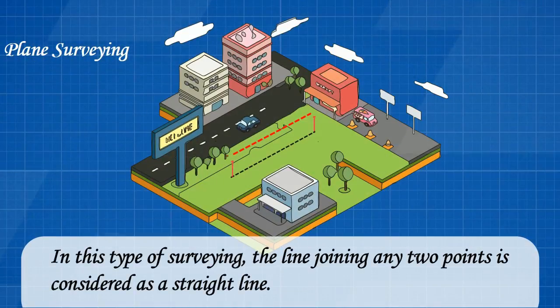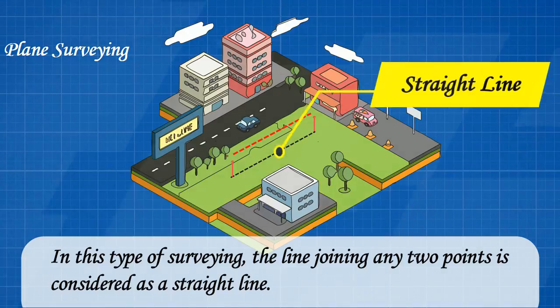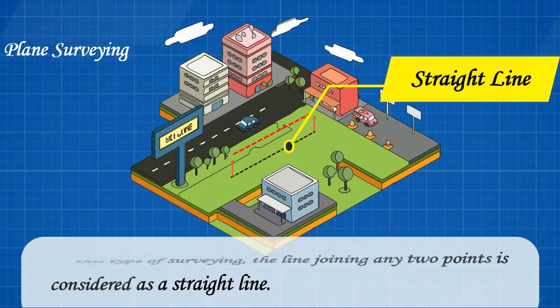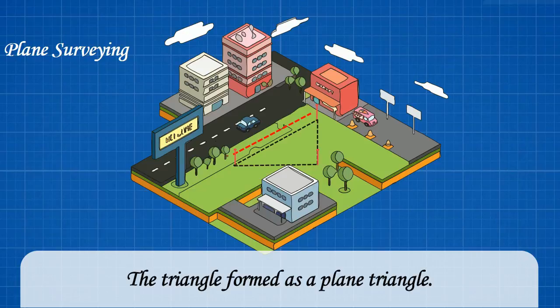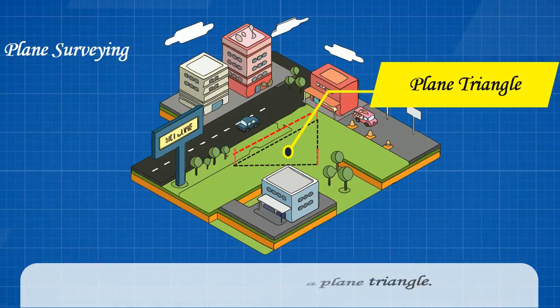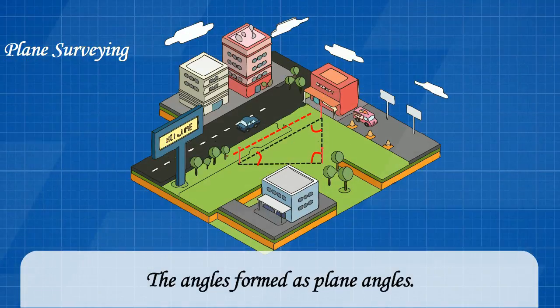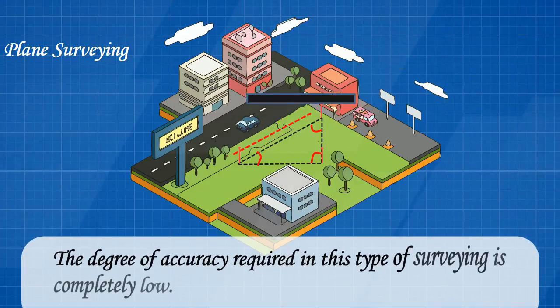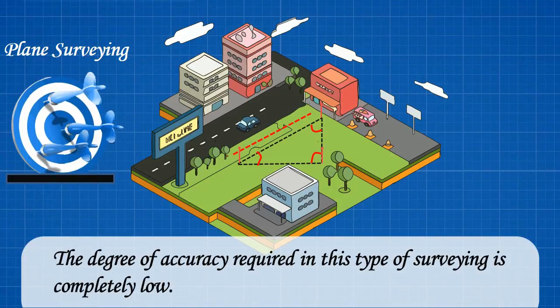In this type of surveying, the line joining any two points is considered as a straight line. The triangle formed is a plane triangle, the angles formed are plane angles, and the degree of accuracy required in this type of surveying is relatively low.